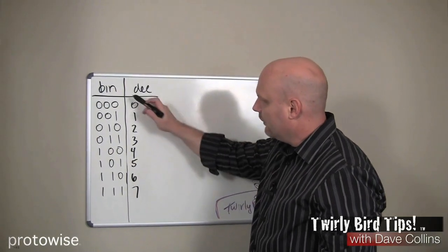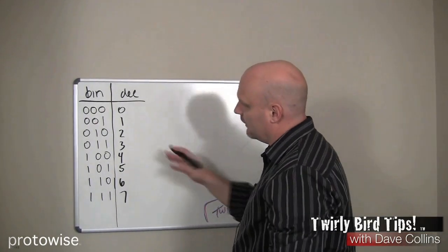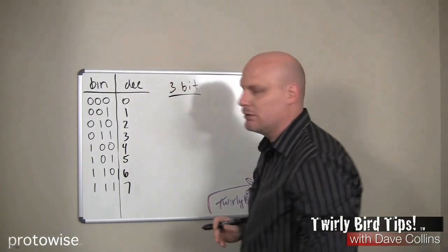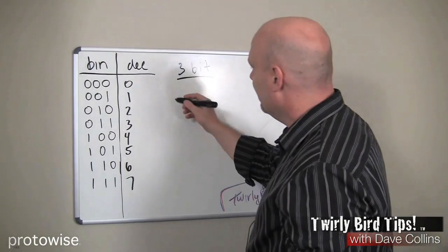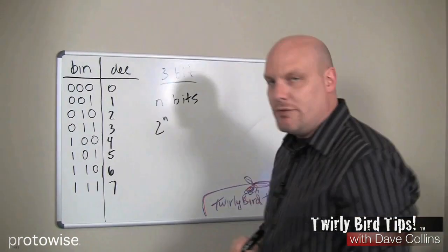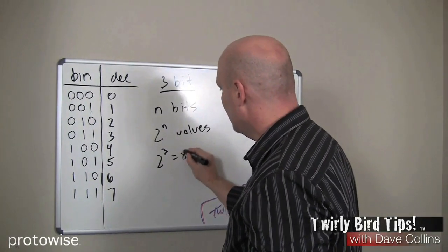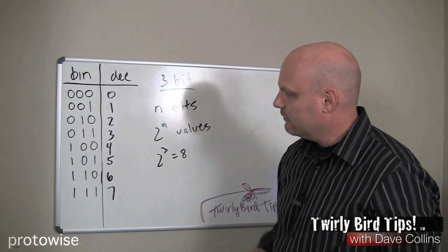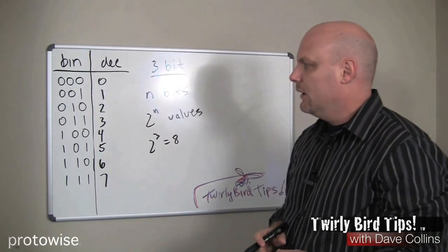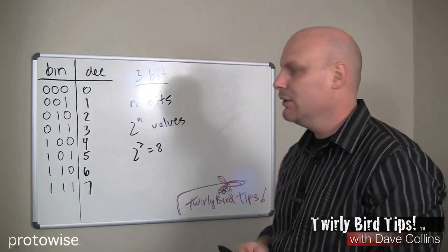We're going to start with a table showing binary and decimal representations of integer values. The system I'm going to use for these examples is a three-bit system. Anytime you have n bits, you can represent two to the n possible values. With a three-bit system, two to the third equals eight, giving us values zero through seven. I use three bits to keep it simple and small — every time you add a bit, you double the possible number of values.